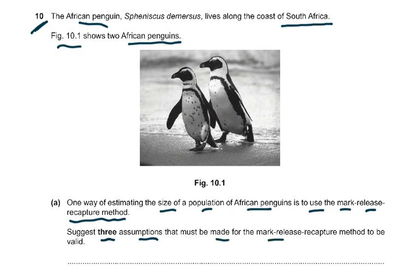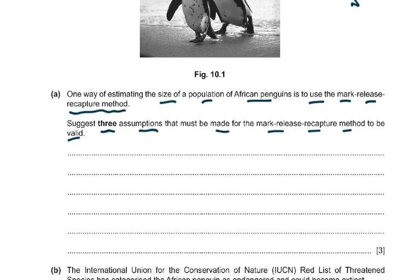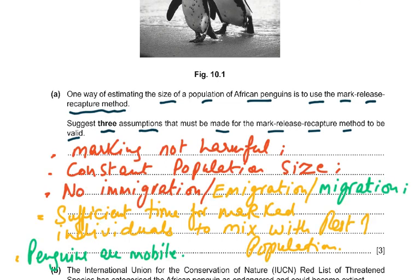The question asks to suggest three assumptions that must be made for the mark-release-recapture method to be valid. First, the marking should not be harmful and should not be removable — it cannot be washed away. Second, there is a constant population size with no immigration or emigration. Third, there is sufficient time for the marked individuals to mix with the rest of the population. Also, the fact that the penguins are mobile is an assumption — they are not stationary.